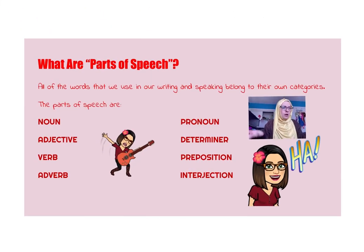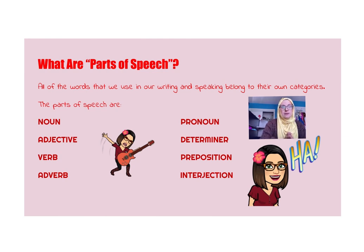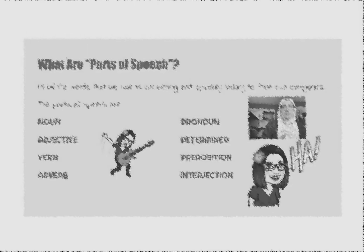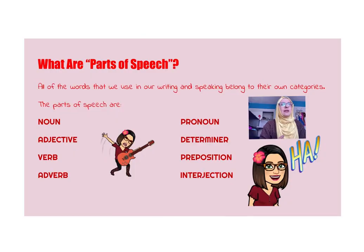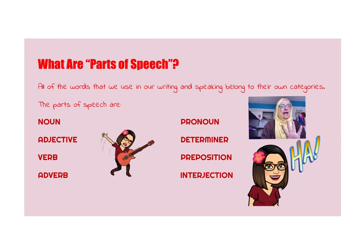So first of all, what are parts of speech? Parts of speech are all of the words that we use in writing and speaking, and these words belong in their own categories. Each word can fit into one of the categories listed on this slide. The parts of speech are noun, adjective, verb, adverb, pronoun, determiner, preposition, and interjection. You have probably heard of a number of these before, but we're going to go into a lot more detail today about what they actually mean.